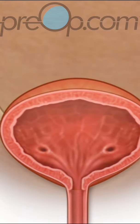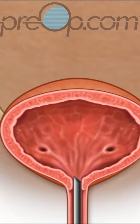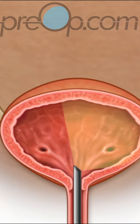A cystoscopy begins with a scope being gently guided through the urethra to the bladder. The surgeon looks carefully for stones, tumors, or other problems. Both ureteral openings are inspected.